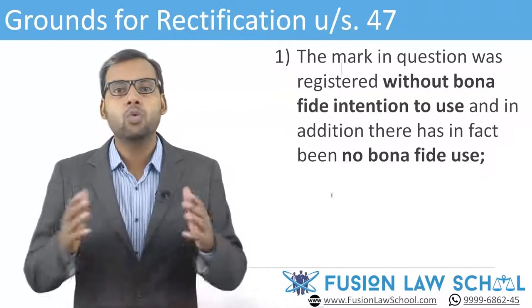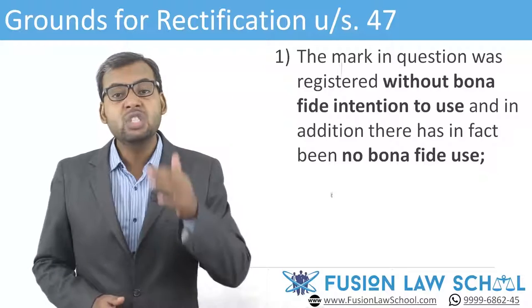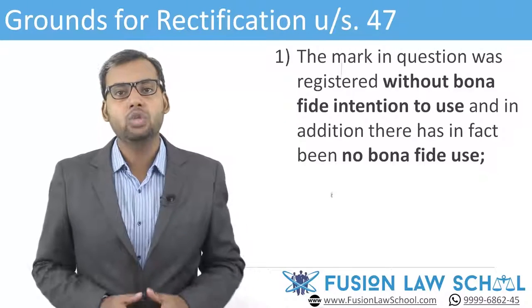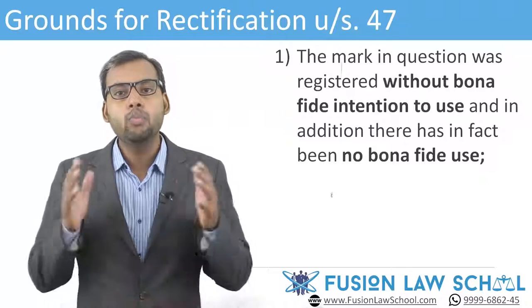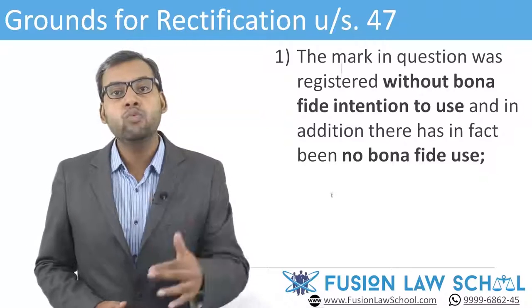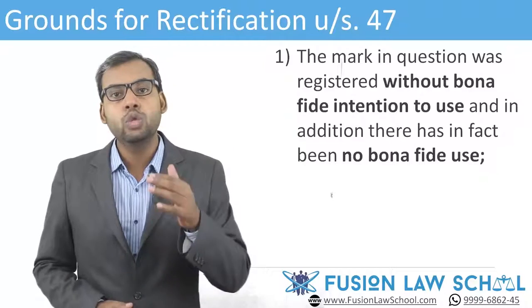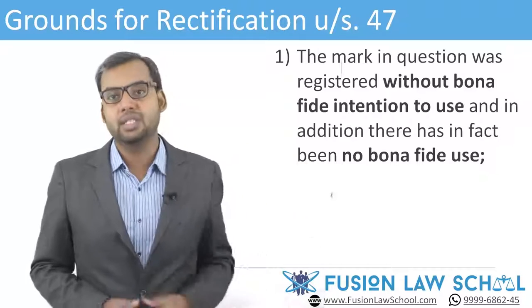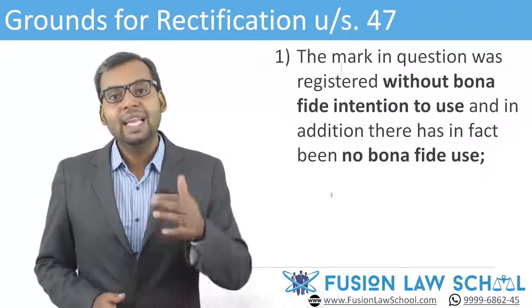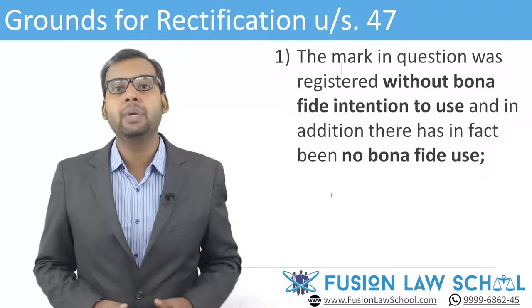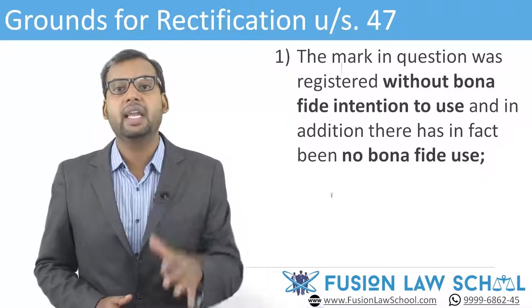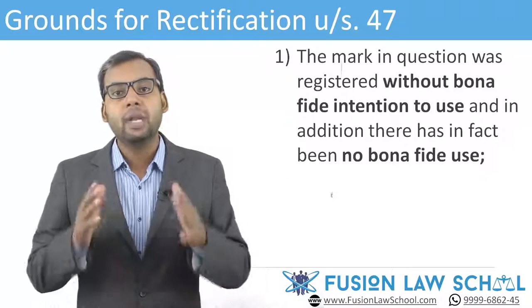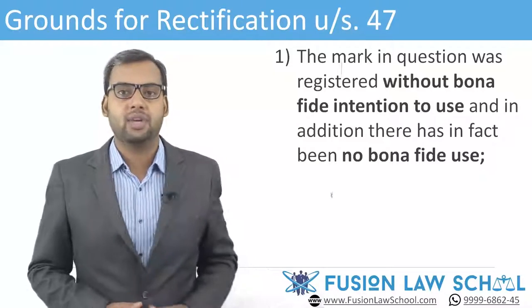The first ground requires that an applicant should satisfy the tribunal that the mark in question was registered without bona fide intention that it would be used in relation to the goods in respect of which it had been registered, and in addition there has in fact been no bona fide use of the trademark in relation to those goods prior to the application for rectification.